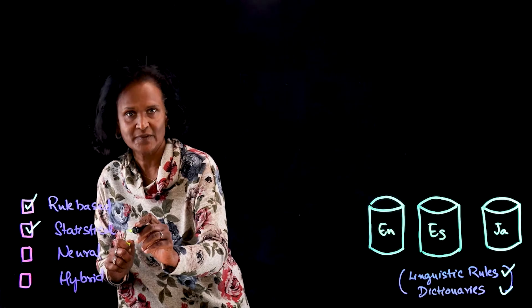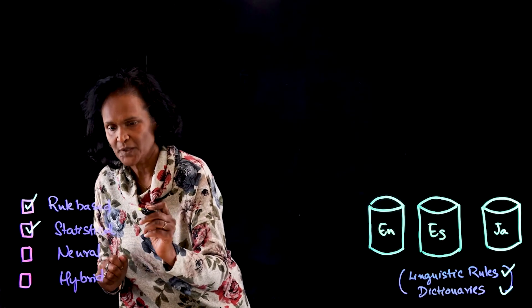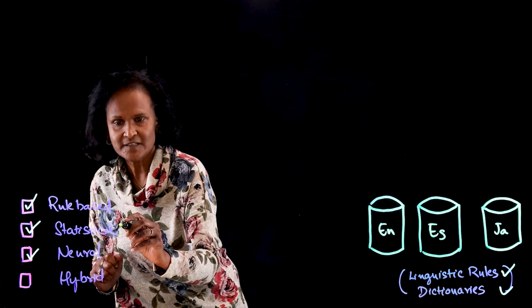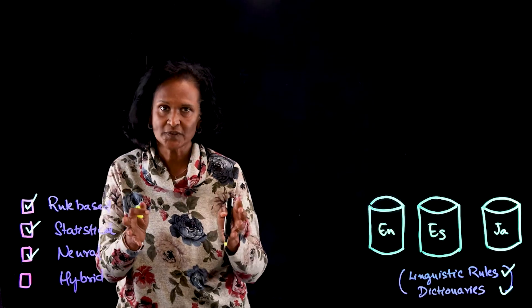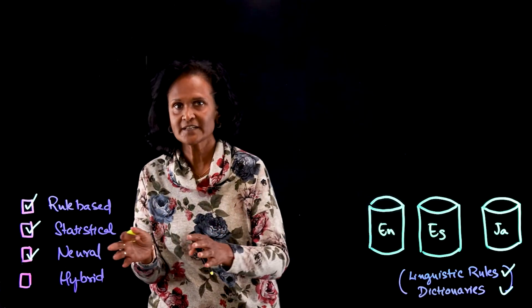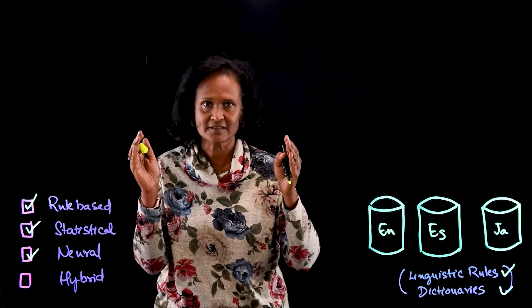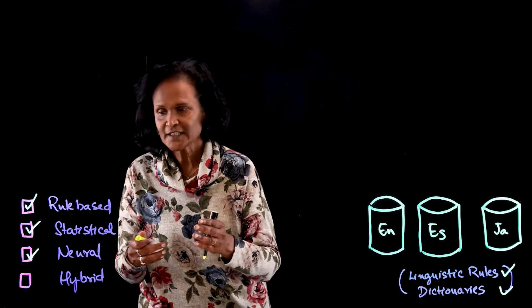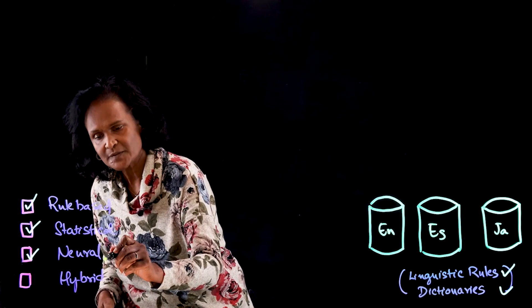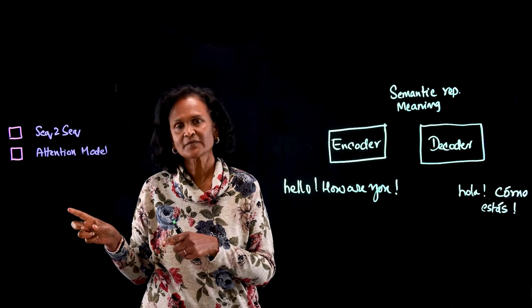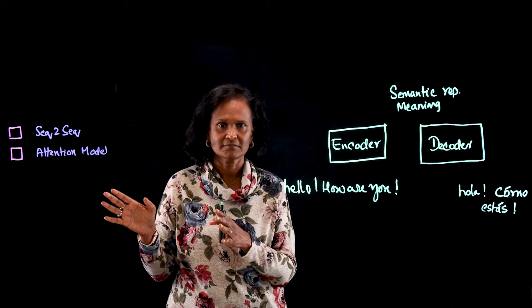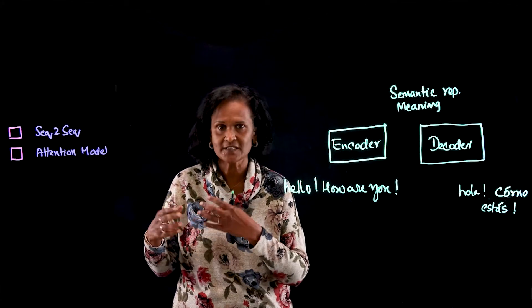Both approaches work very well. We take it one notch up with the neural approach, where — unlike rule-based and statistical which look at each word to get translations — the neural approach looks at the sentence constructions to do the translations. As in any other approach, you can take a combination of these approaches and make it a hybrid approach. So as we discussed, the traditional way makes use of linguistic rules as well as dictionaries, and it goes through supervised learning and so on.